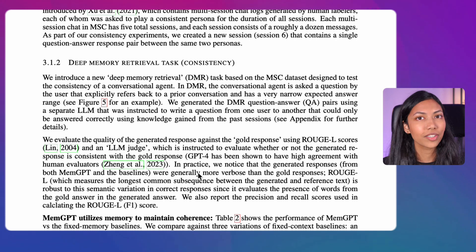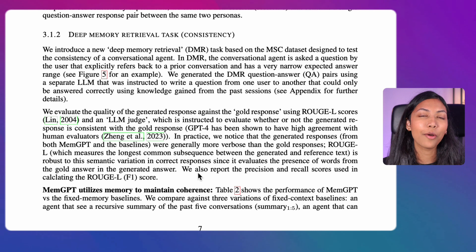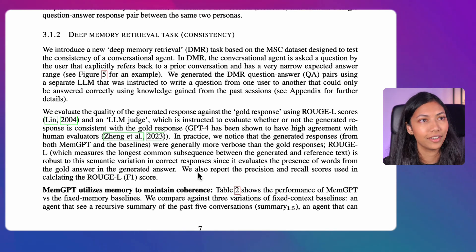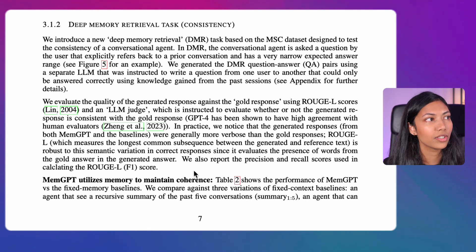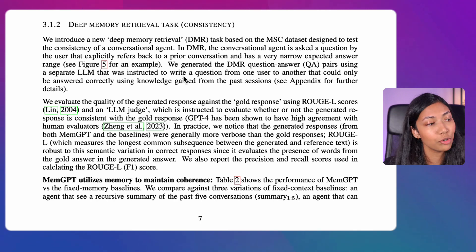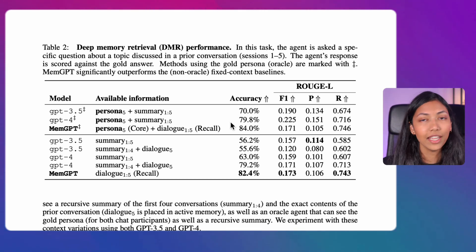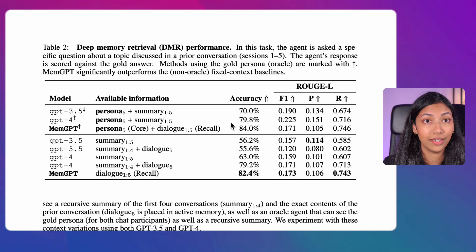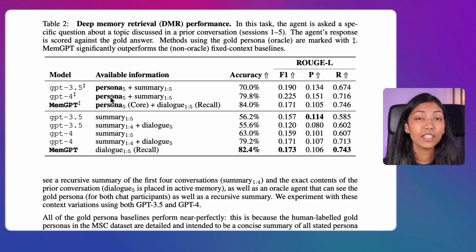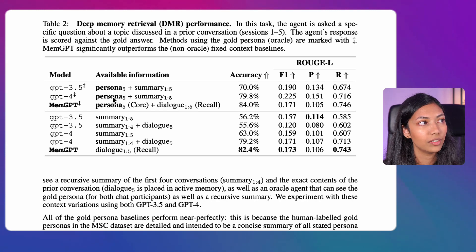Now let's look at how MemGPT performs at various tasks when tested against GPT-4 and GPT-3.5. One main task the researchers tested was deep memory retrieval — when the agent is asked a specific question about a topic discussed in a prior session, one to five sessions prior. The agent's response is scored against gold human-generated answers. MemGPT outperforms both GPT-4 and GPT-3.5, with a significant difference against GPT-3.5 and a smaller but meaningful difference against GPT-4.